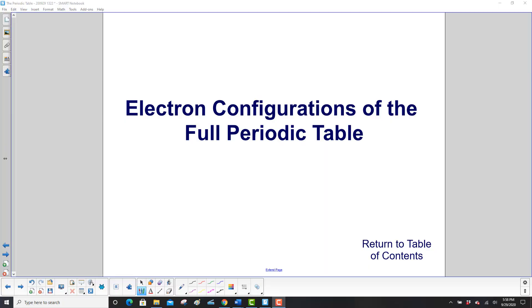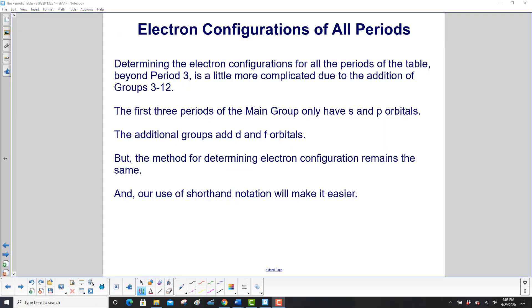Electron configurations of the full periodic table. Determining the electron configurations for all the periods of the table beyond period 3 is a little more complicated due to the addition of groups 3 through 12.